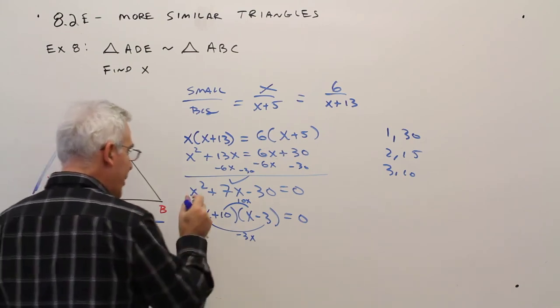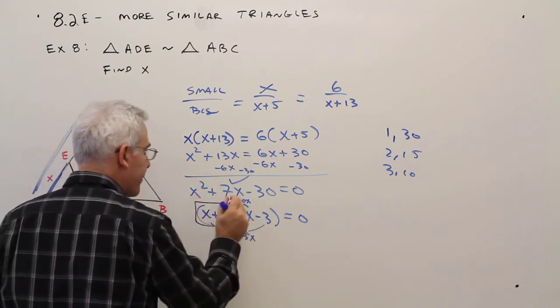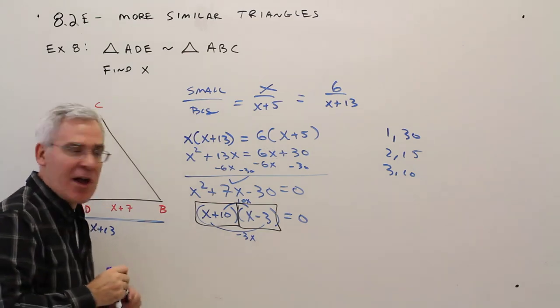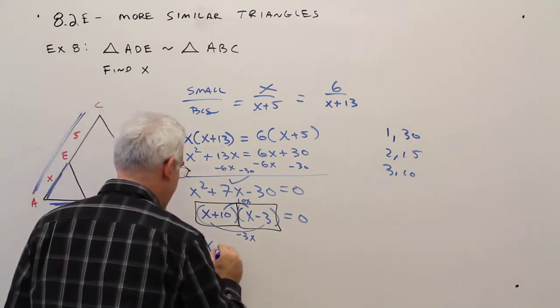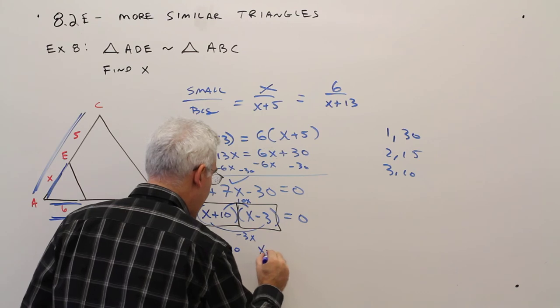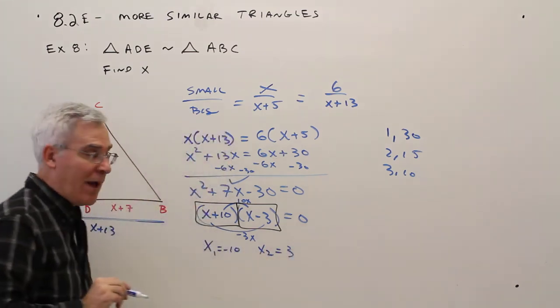Then what you want to do is chunk it and set each chunk equal to zero. So then I'm going to get X sub 1 equals negative 10. X sub 2 equals positive 3.